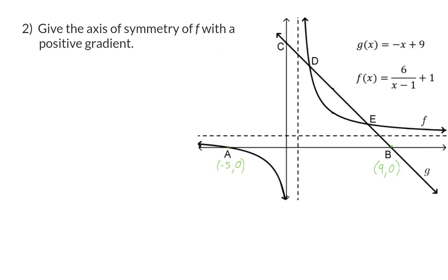Question 2: Give the axis of symmetry of f with a positive gradient. This is now an example of the theory that you need to know. You need to know that for a hyperbola, there are two axes of symmetry, and the one with a positive gradient always has a gradient of 1.